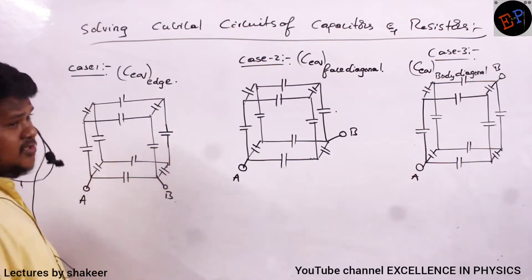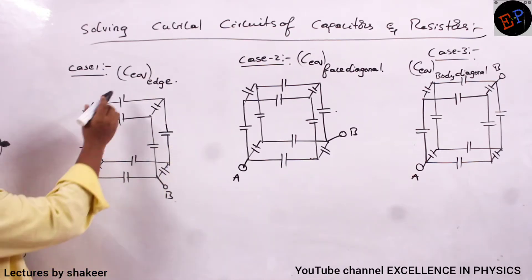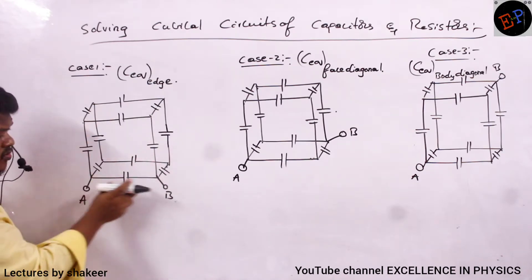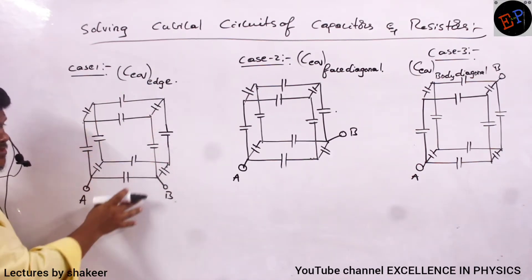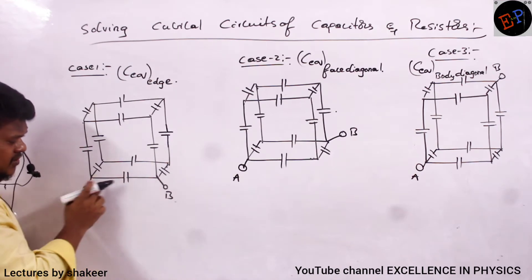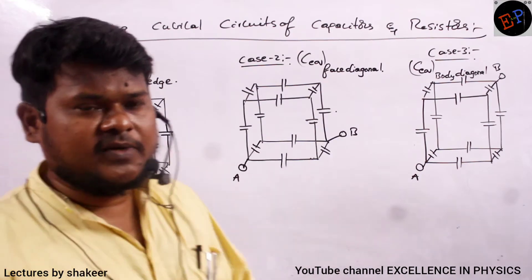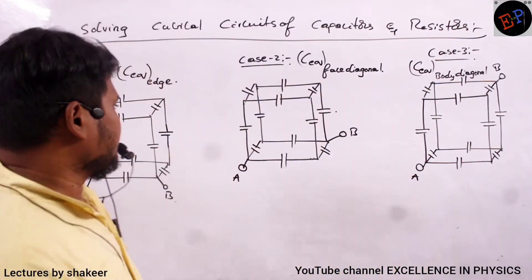See here, first let us study the arrangement. So initially, I am calculating equivalent capacitance where? In between two edges. Totally 12 edges are there. Across one edge if I want to calculate capacitance. So one terminal connected here, second terminal connected to same edge itself. Across the edge only, we are giving the connections.